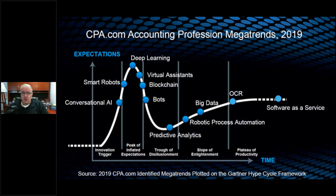The AICPA and CPA.com use a similar model. Starting with an innovation trigger, they place conversational AI and smart robots there. At the peak of inflated expectations is deep learning. Blockchain and bots are heading down into the trough of disillusionment. Robotic process automation, however, is coming out of that trough. Big data and OCR are out, and software-as-a-service is well past the plateau of productivity. We're really going to focus on robotic process automation and AI where we use bots and other tools to change our workflows.